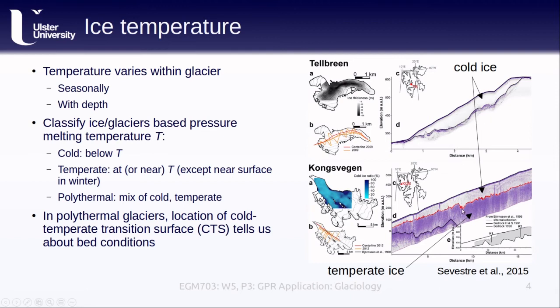Where this is and whether the cold ice is on the top or the bottom tells us something about the bed conditions. Where glaciers have cold ice at the bottom or bed of the glacier, we know that they can't be sliding, and in this case we say that they're frozen to the bed. The presence of liquid water at the bed of the glacier has an impact on how the glacier flows. In general, when there's water at the bed, the glacier is able to slide, which increases how fast the glacier flows.